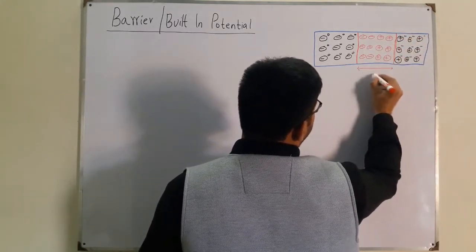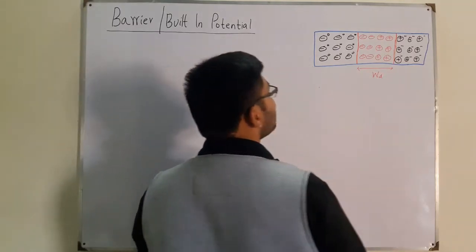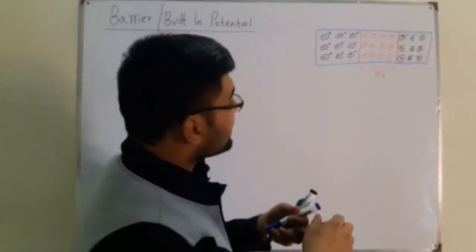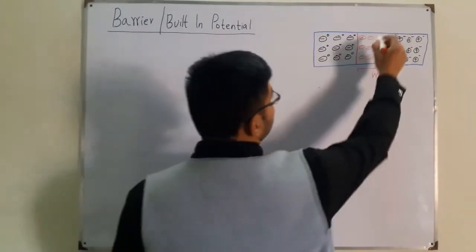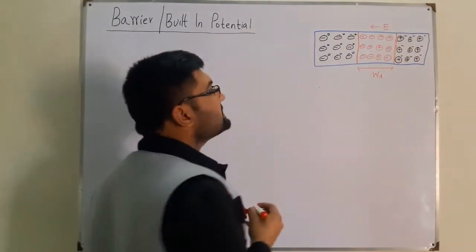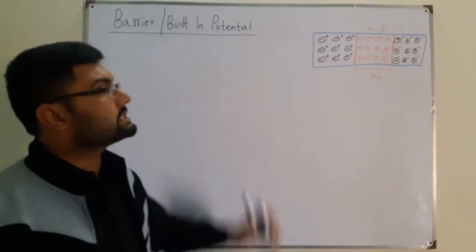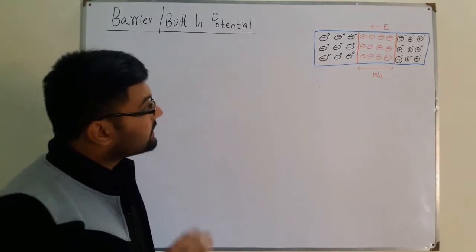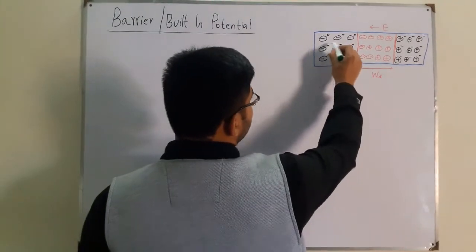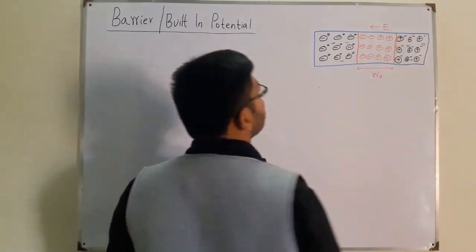The width of the depletion region is fixed for any material — this is WD — and we have an associated barrier potential. If more electrons want to flow, an electric field is established in this direction, which stops the further flow of majority carriers from one side to another. We also have minority carriers: electrons in minority at the P side and holes in minority at the N side.